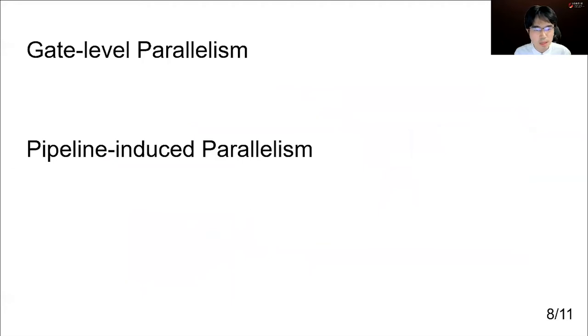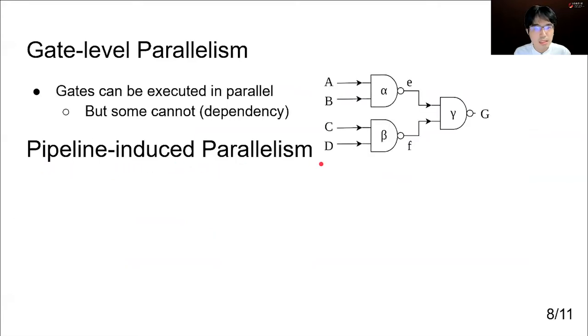There are two types of parallelism in FHE logic circuits evaluation you can try to exploit. One is the gate-level parallelism and the other is pipeline-induced parallelism. The gate-level parallelism means sometimes there are multiple gates that are evaluable at the same time. For example, in this circuit, alpha and beta can be parallelly evaluable, but gamma is not, because the evaluation of gamma depends on the results of alpha and beta.